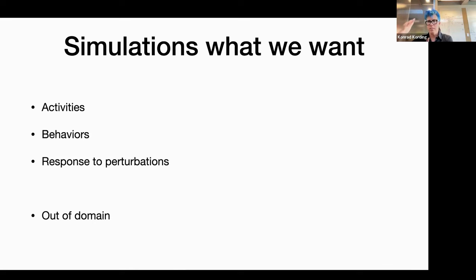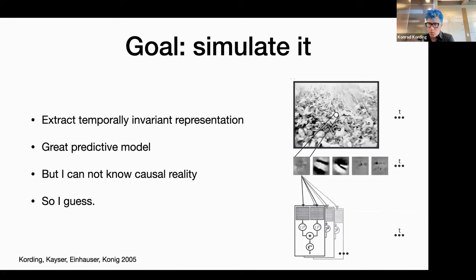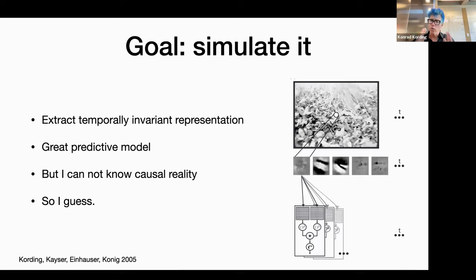In the same way, if you could simulate me, it's not enough if in all situations I've encountered in the past the simulation is correct. The simulated Conrad must also do all the things Conrad would do when it comes into a new situation. That leads us down a path of causality. The goal is to simulate. My goal during my PhD 20 years ago was already to lead to a simulation — we know what's on screen in front of the cat, can we predict what every single neuron will be doing?